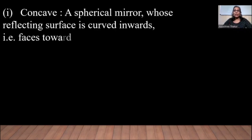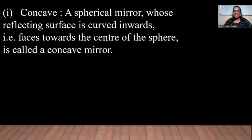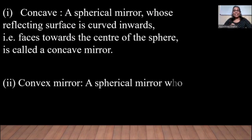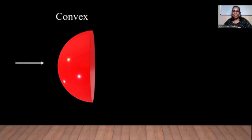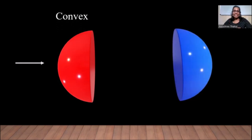You can repeat this activity at home. A spherical mirror whose reflecting surface is curved inwards — that is, faces towards the center of the sphere — is called a concave mirror. A spherical mirror whose reflecting surface is curved outwards is called a convex mirror. This is a convex surface curved outwards, and this is a concave surface which is curved inwards.